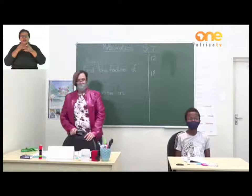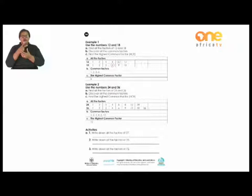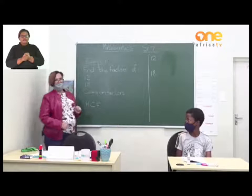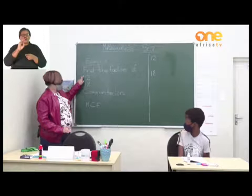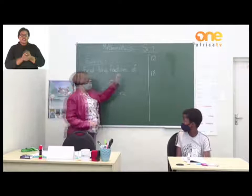On page 14 we will find some examples, which I will explain on the board now. Let's go to the board. The first example: find the factors of 12 and 18. My two numbers are 12 and 18. We will write the factors of 12 first.